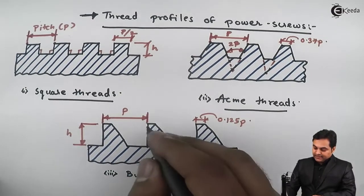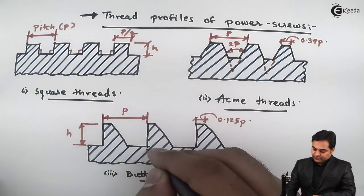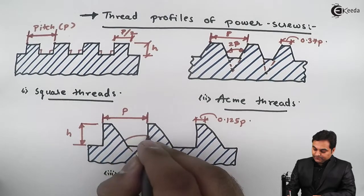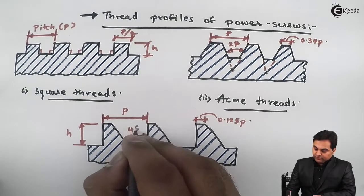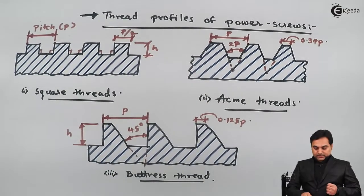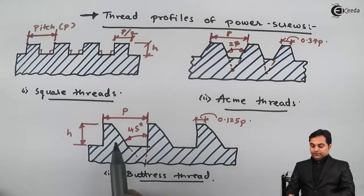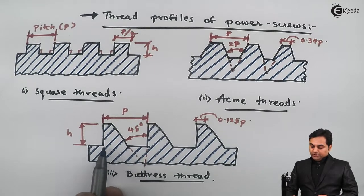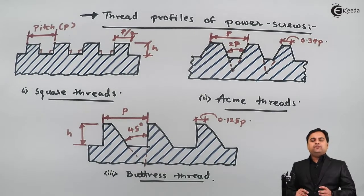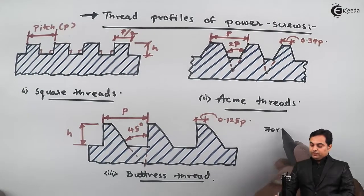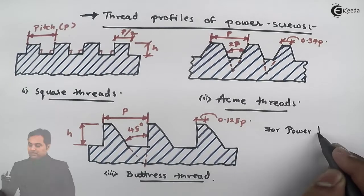In the buttress thread, if I extend the vertical line and the inclined line, they meet at an angle inclined at 45 degrees — that is the inclination used for buttress thread. At the core of the buttress thread the area is more, which offers more strength. Buttress thread is useful for power transmission.